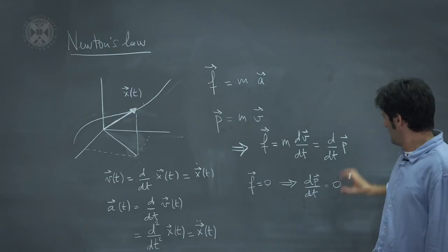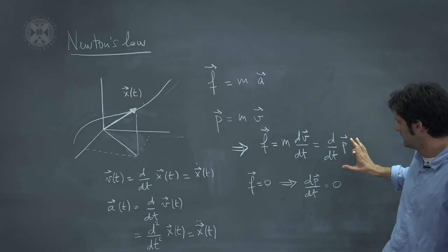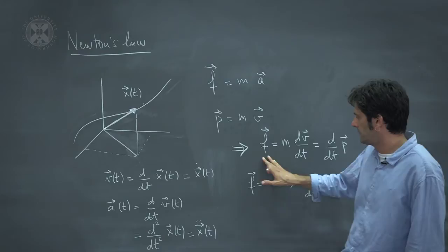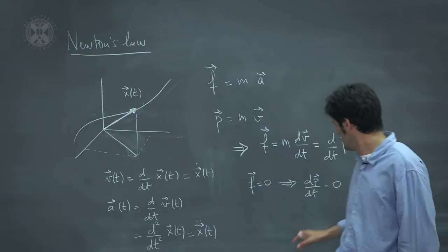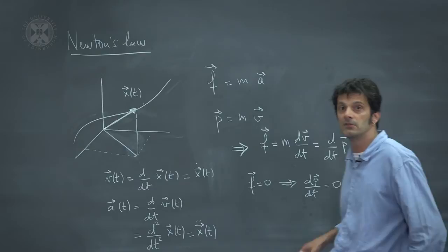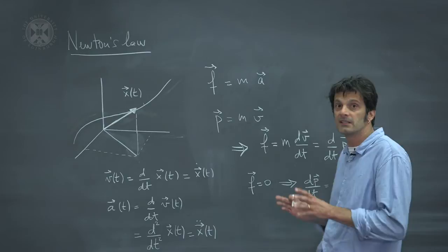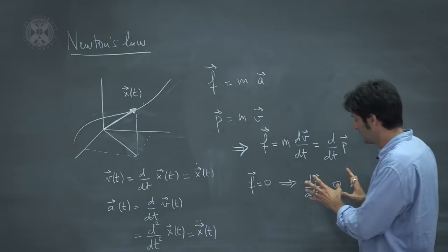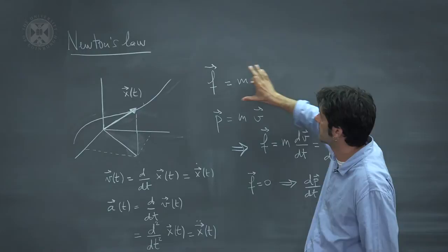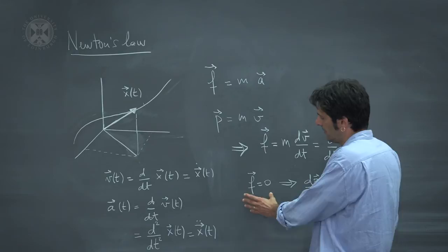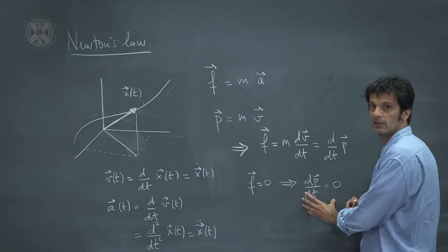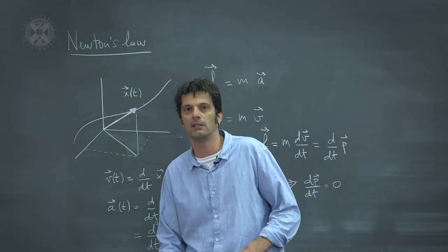There is a simple consequence of rewriting Newton's law in this form. Namely, if you take F to be zero — so if your system is isolated and there are no forces acting on it — then the time derivative of the momentum is zero, which means the momentum of the system is conserved. We've seen something extremely important: a conservation law. Starting from first principles, under the condition that forces vanish, there is a quantity which is conserved. This kind of conservation law will appear again and again during the course.